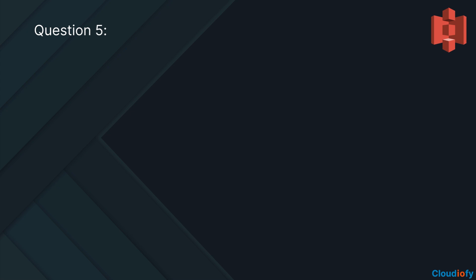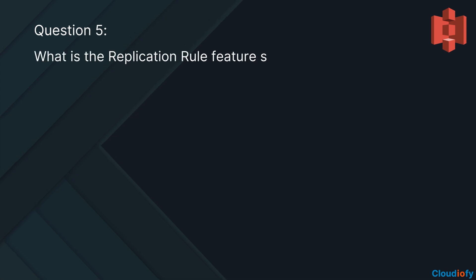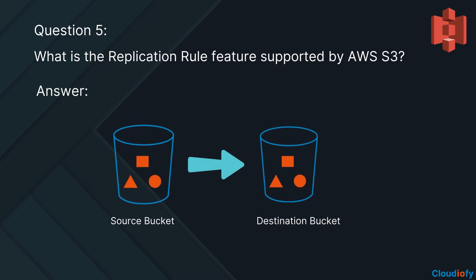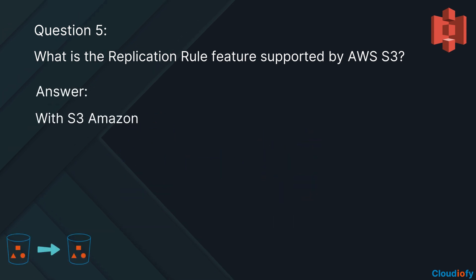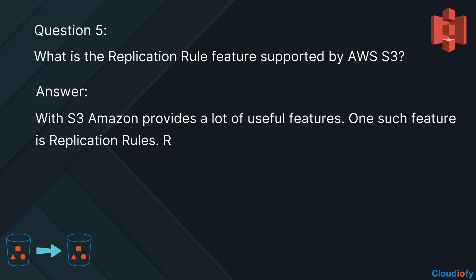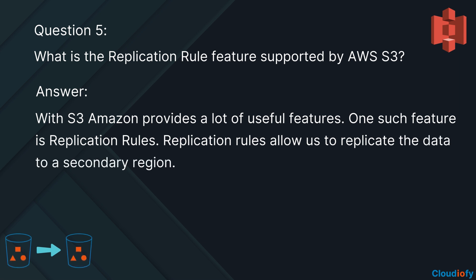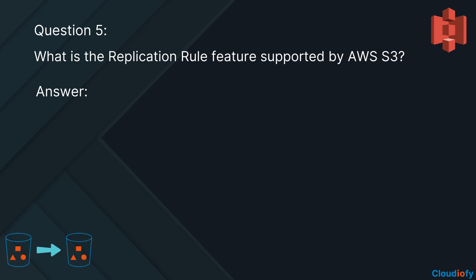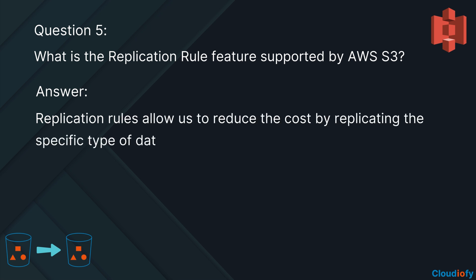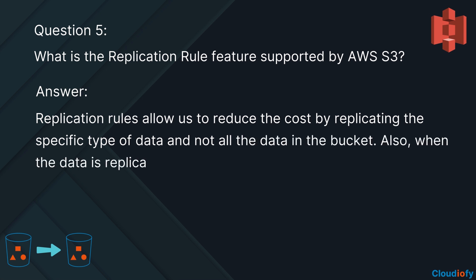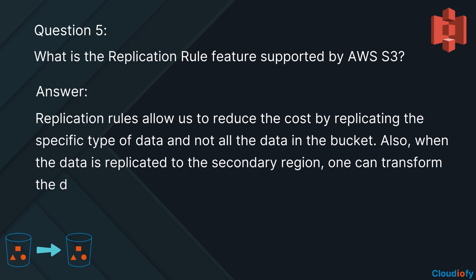The next question is: what is the replication rule feature supported by AWS S3? With S3, Amazon provides a lot of useful features. One such feature is replication rules. Replication rules allow us to replicate data to a secondary region, and reduce cost by replicating only specific types of data rather than all data in the bucket. Also, when data is replicated to the secondary region, one can transform the data storage class to optimize the cost.